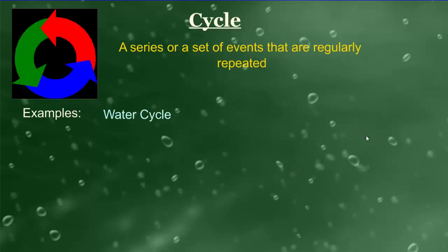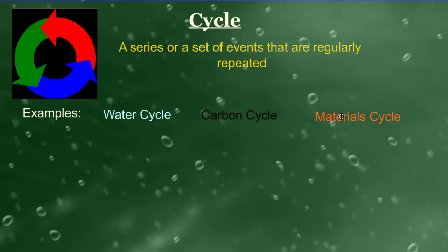We have the water evaporate, condense into the sky and into the clouds, move over to the land, follow precipitation, flow across the land, sink and repeat itself. The carbon cycle will do the same thing, and we will talk about the material cycle in ecology as well.